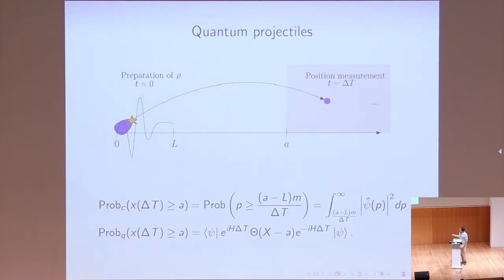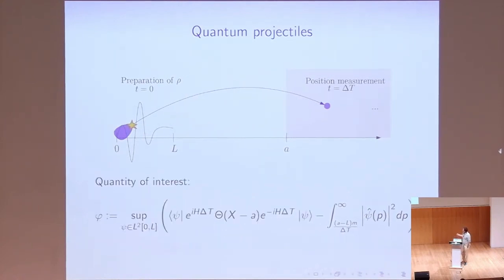And the quantum probability, well, it's given by the operator. This is the measurement operator of seeing the particle in a position bigger than a, and we evolve the particle, of course, for time t under the free Hamiltonian, so p squared over 2m.